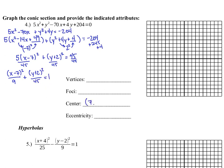We arrive at 5 times (X minus 7) squared plus (Y plus 2) squared equals 45. Dividing both sides by 45, my final standard form is (X minus 7) squared over 9 plus (Y plus 2) squared over 45 equals 1. The center is X equals 7, Y equals negative 2. The larger denominator is under Y, so this is a vertically stretched ellipse. The A value is the square root of 45, or 3 root 5, approximately 6.7. The B value — which sets the width — is 3, the square root of 9.